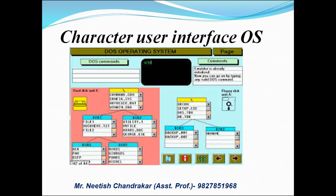इसी को बोलते हैं Character User Interface Operating System, जो यूजर को नए-नए Features और सुविधाएं उपलब्ध कराता है। यह Operating System बहुत ही लोकप्रिय था — पहले जब यूज होता था, third या fourth generation में। उस समय बहुत ही लोकप्रिय हुआ करता था, क्योंकि उस समय Windows 7, Windows 10, Linux, Unix जैसे latest Operating Systems नहीं आए थे। इनके पहले DOS आया था।